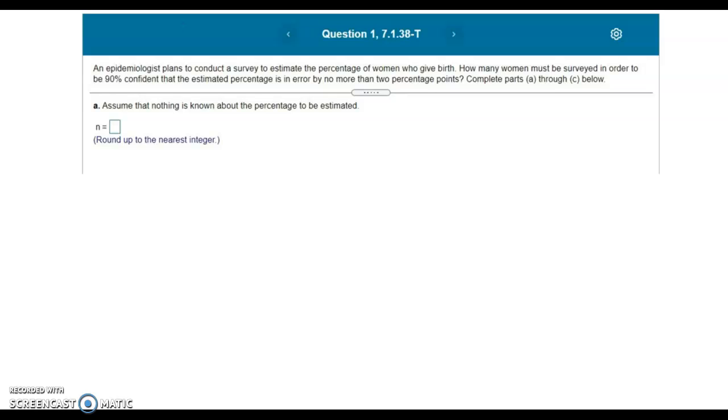I always like to write down what we know. As we go through the problem, we see that we want to be 90% confident. So I'm going to write that down, 90% confidence level, CL.